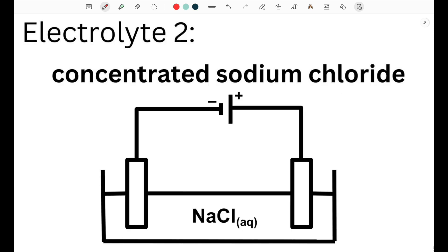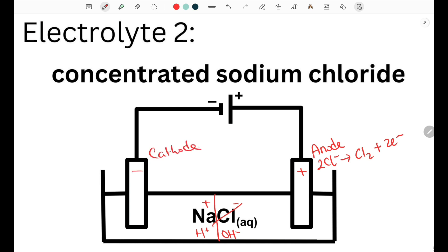Next, we'll look at the electrolysis of concentrated sodium chloride solution. In this electrolyte, we have sodium ions, hydrogen ions, as well as chloride ions and hydroxide ions. At the positive anode, there are far more chloride ions that will likely be discharged into chlorine gas and 2 electrons. At the negative cathode, ions of the less reactive element — in this case hydrogen ions — gain 2 electrons and are reduced into hydrogen gas, leaving behind sodium and hydroxide ions that form sodium hydroxide solution at the cathode.